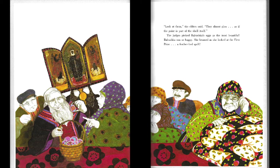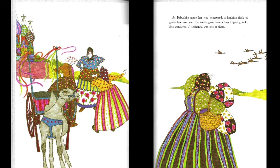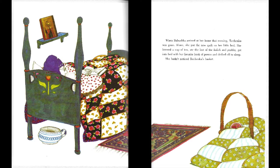Babushka was so happy, she beamed as she looked at the first prize — a feather bed quilt. As Babushka made her way homeward, a honking flock of geese flew overhead. Babushka gave them a long, lingering look. She wondered if Rishenka was one of them. When Babushka arrived at her home that evening, Rishenka was gone. Alone, she put the new quilt on her little bed. She brewed a cup of tea, ate the last of the kulich and baska, got into bed with her favorite book of poems, and drifted off to sleep.